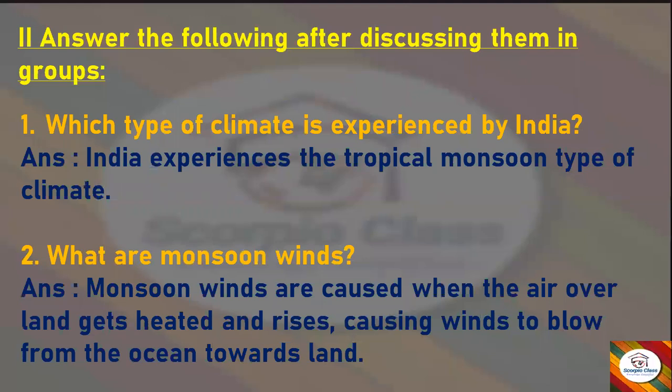Now let's move to the question and answers. First question: which type of climate is experienced by India? Answer: India experiences a tropical monsoon type of climate. Second question: what are the monsoon winds? Answer: monsoon winds are caused when the air over land gets heated and rises, causing winds to blow from the ocean towards land.